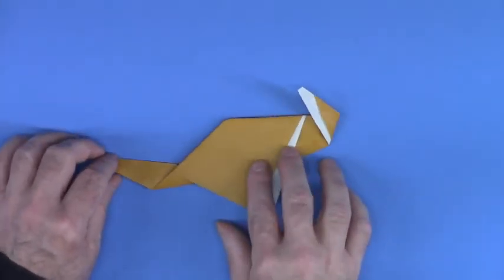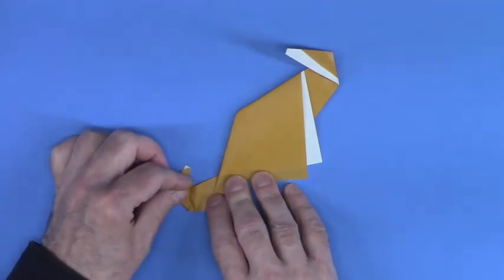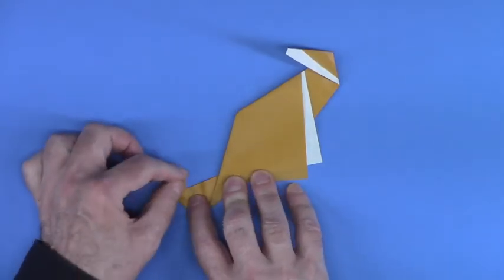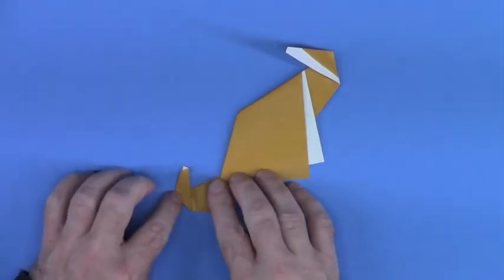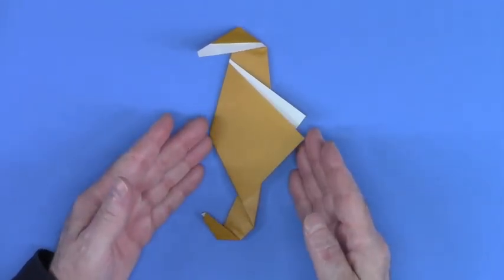And finally, fold the end of the tail. Again, whatever angle looks best. Like that. And here's the completed simple seahorse.